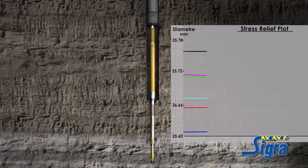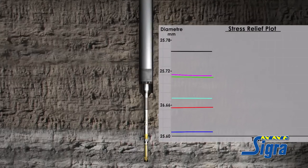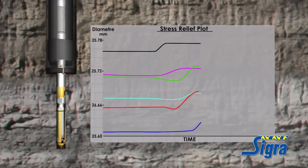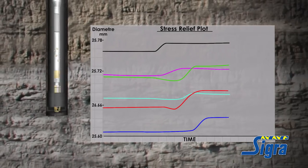After a set period, the rods are lowered to the bottom and coring commences over the tool. As the bit progresses past the sets of pins located in the pilot hole, a change in pilot hole diameter is measured by the tool.